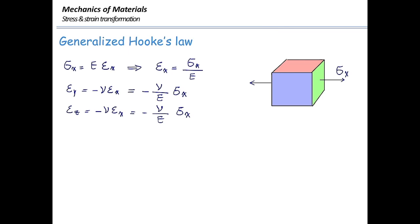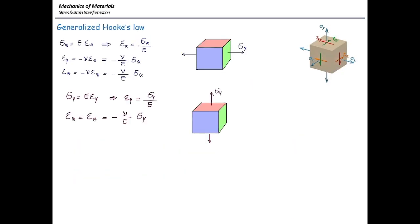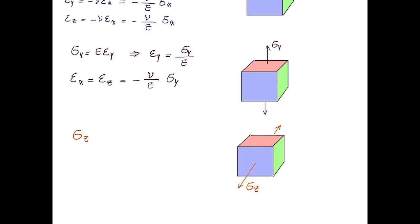Now I'm going to do the same for a three-dimensional stress element subjected to stress in the y direction. We can say sigma y is equal to E multiplied by epsilon y, and epsilon y is sigma y divided by E. Epsilon in the x and z directions are the lateral strains, equal to negative nu over E multiplied by sigma y. Extending this to stresses in the z direction: sigma z equals E multiplied by epsilon z, epsilon z is sigma z divided by E, and epsilon x equals epsilon y equals negative nu over E multiplied by sigma z.